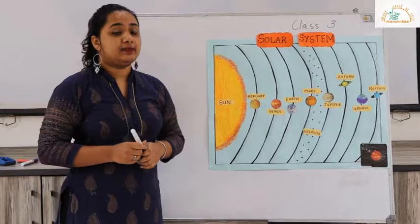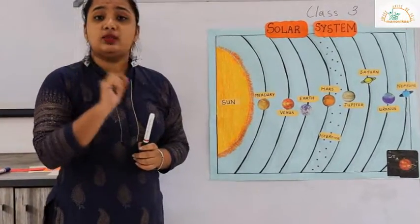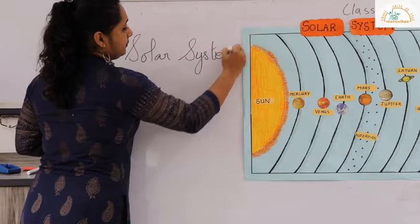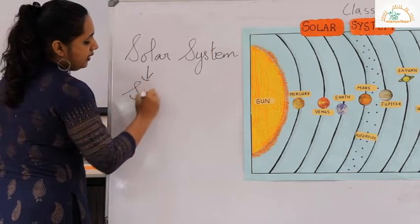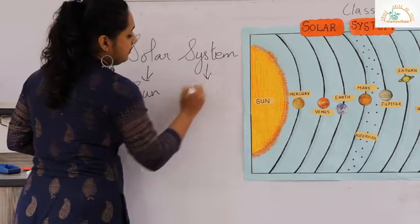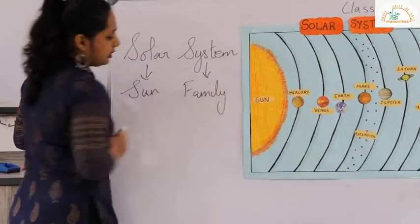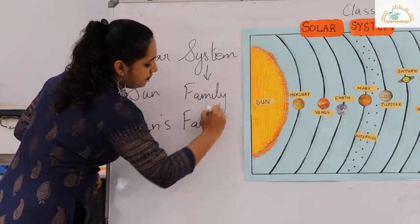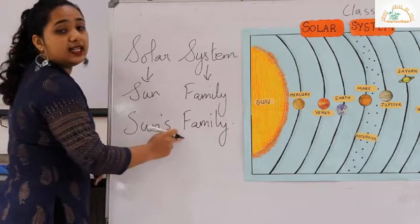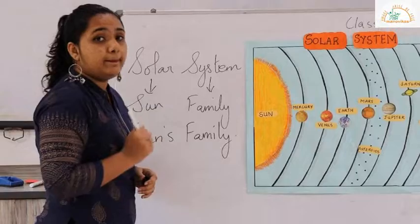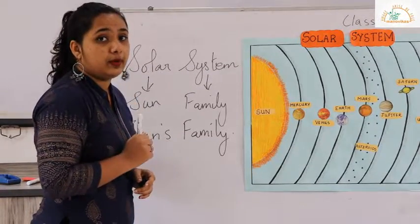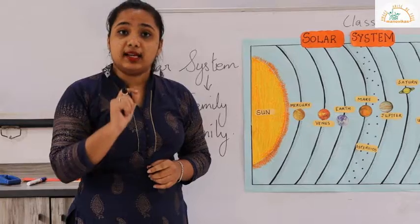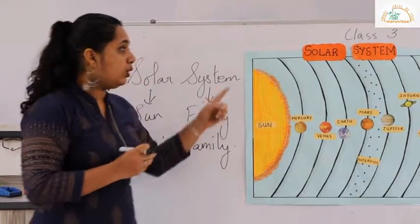Let us learn about the solar system. I will make it a little simpler for you. What does solar system mean? Solar — another word for solar is sun. Another word for system is family. So if we complete the statement, we get to know it's the sun's family. Now in the sun's family, the sun is the most important member. Let us see why the sun is the most important member by looking at three important pictures.